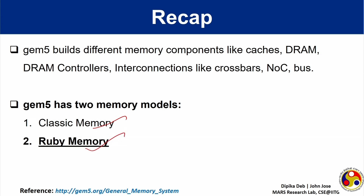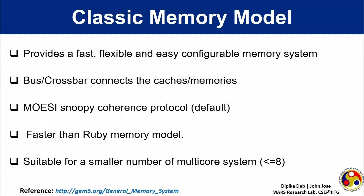Throughout our assignment we will use Ruby memory. The classic memory model provides a fast, flexible, and easily configurable memory system. It uses a bus or crossbars to connect the caches and memories in the system. For multi-core processors implemented in the classic memory system, the MOESI SNOOP coherence protocol is implemented. This memory model is faster than the Ruby memory model, but it is suitable only for a small number of multi-core processors, generally less than 8 cores in a system.